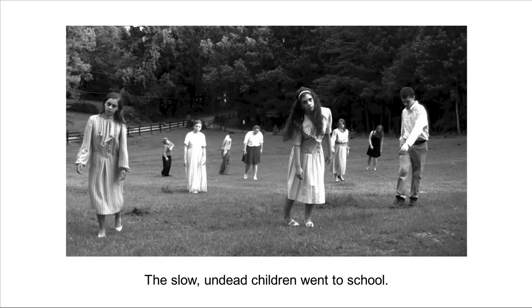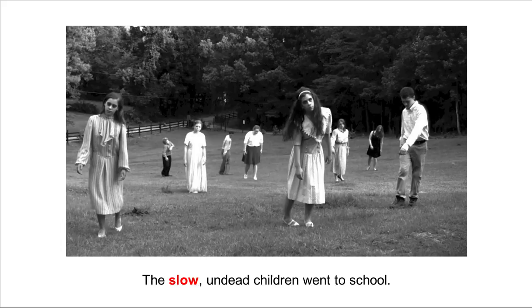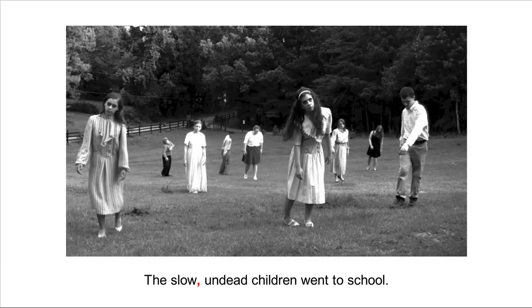Well, let's find the main subject of this sentence, or the main noun. That would be children. Now let's see if we have some adjectives. Since this topic is about adjectives, what adjectives do we have? We have slow, as in the slow children went to school, and we also have undead, as in the undead children went to school. But notice that little thing that separates them — that's a comma.